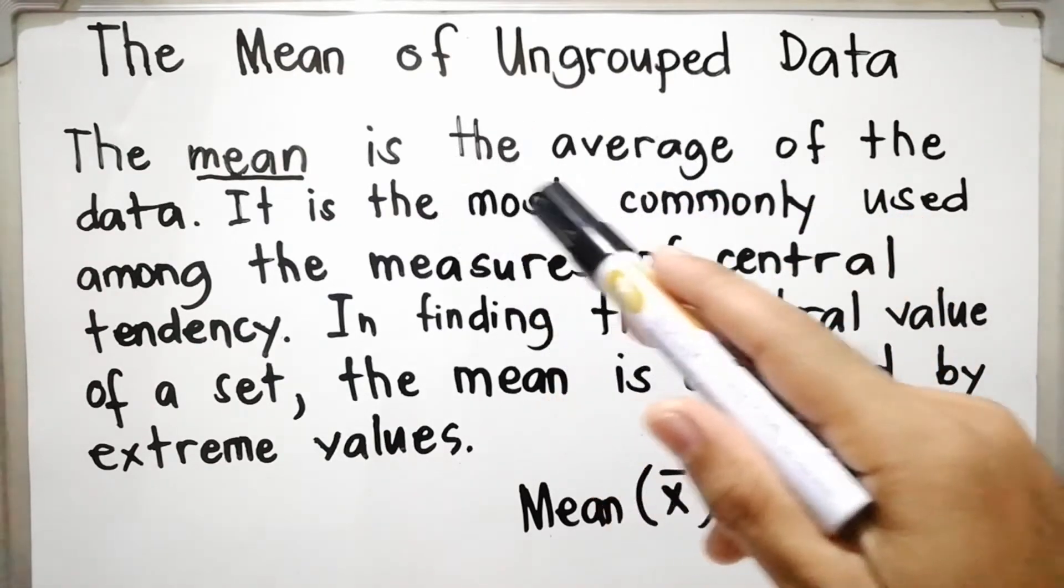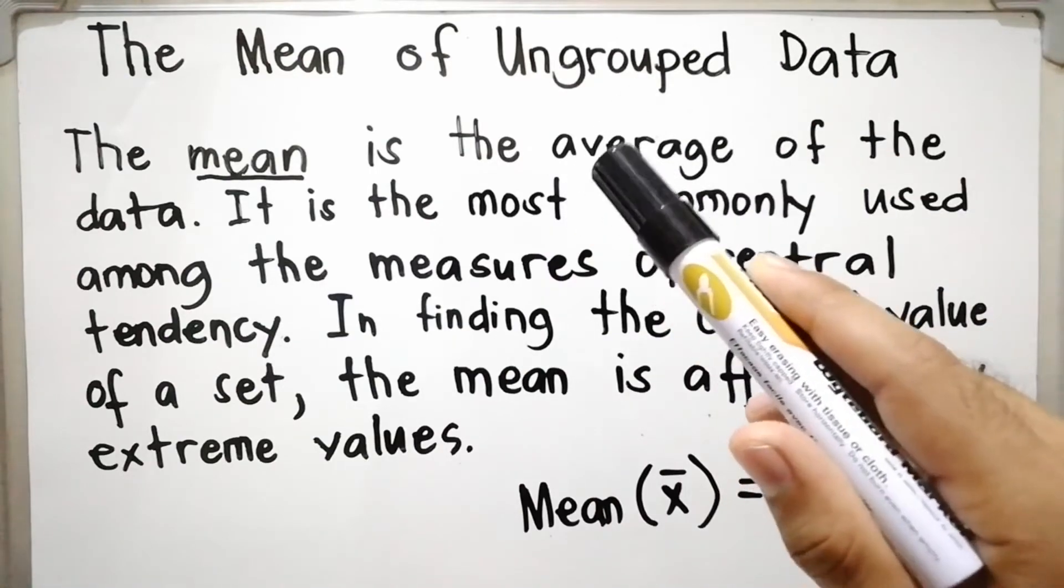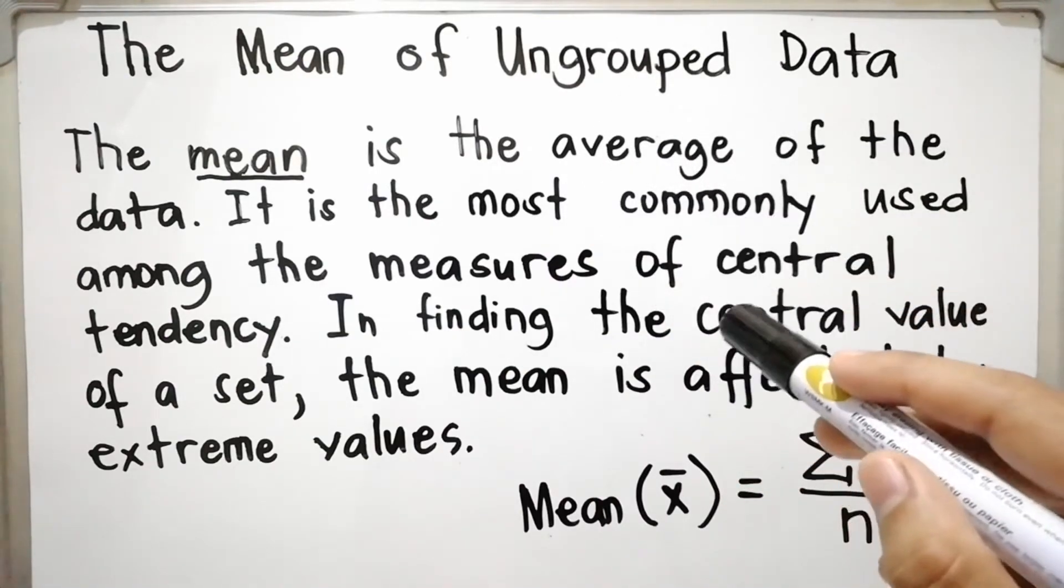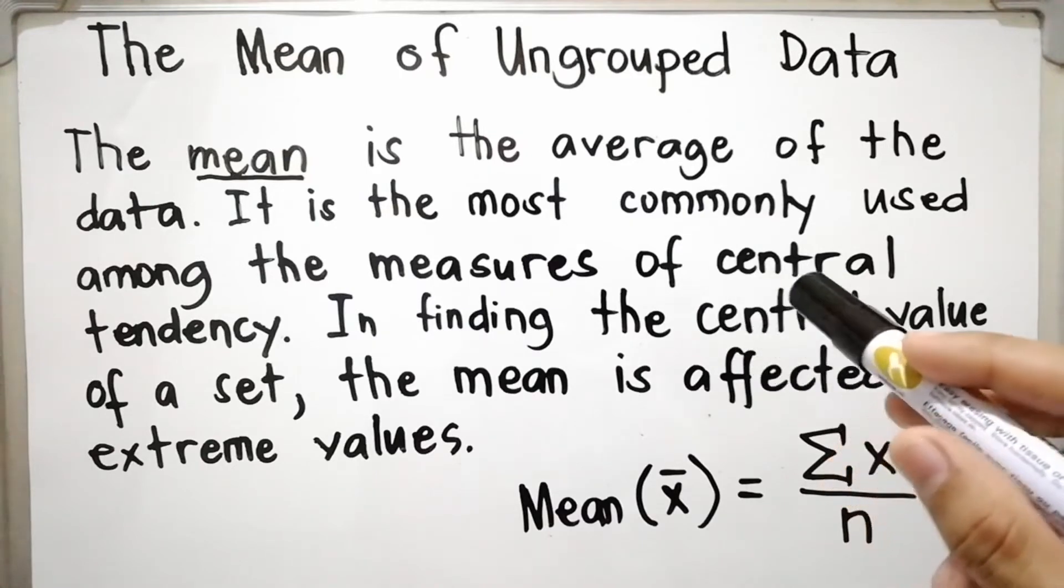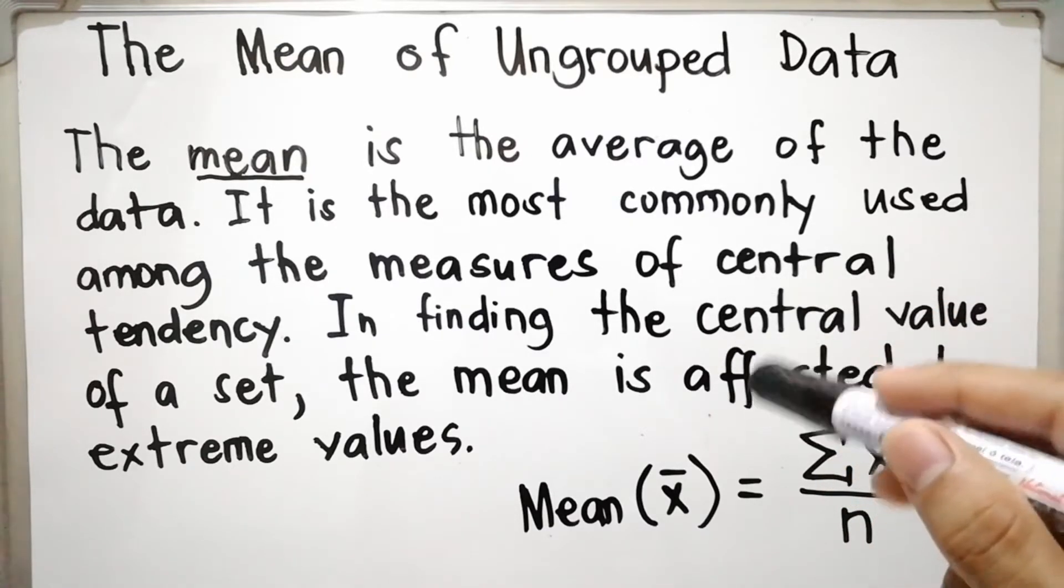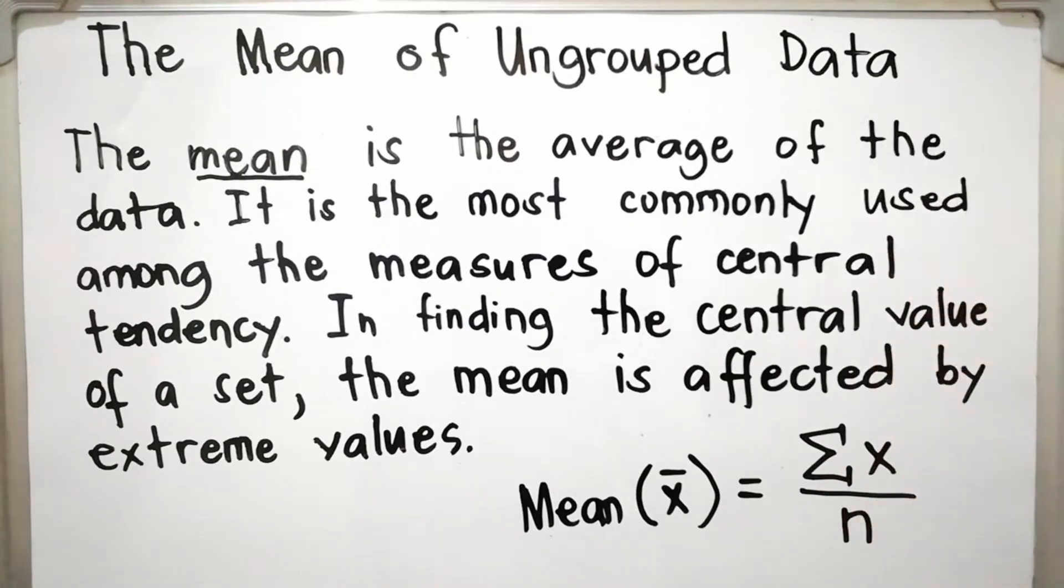The mean is the average of the data, also known as the average. It is the most commonly used among the measures of central tendency. In finding the central value of a data set, the mean is affected by extreme values.